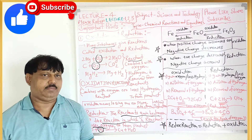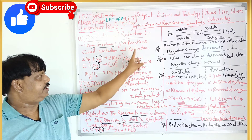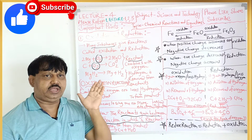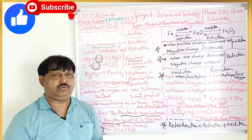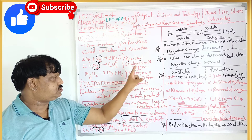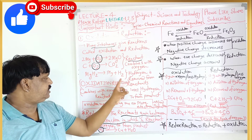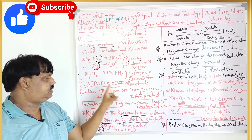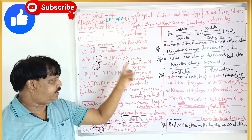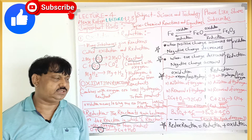Ab hum dekhenge phir se ek baar oxidation ke baare mein. So oxidation — yahan pe likha hai — reactant combined with oxygen. Reactant hamesha left hand side mein hote hain, product right hand side mein. Toh reactant combines with oxygen — that is oxidation — or hydrogen is removed from the reactant to form the product. Such type of reaction is called an oxidation reaction.